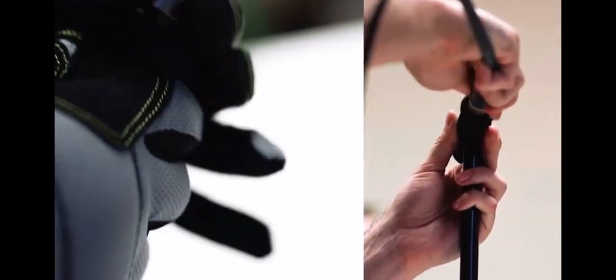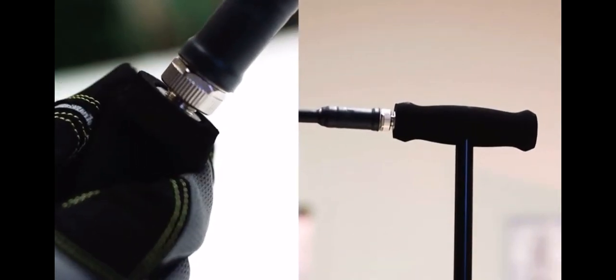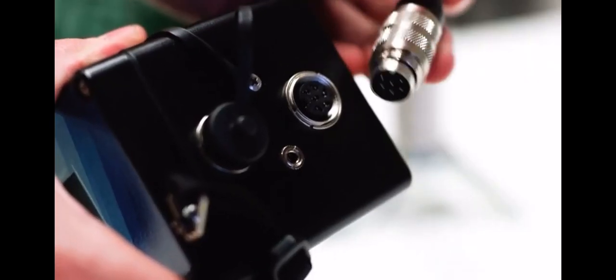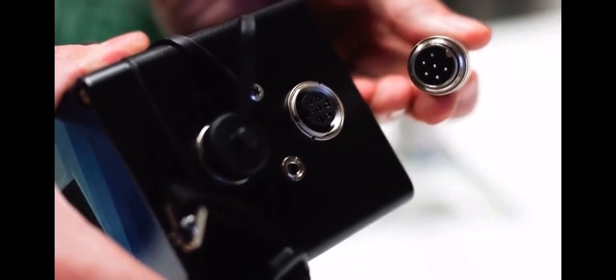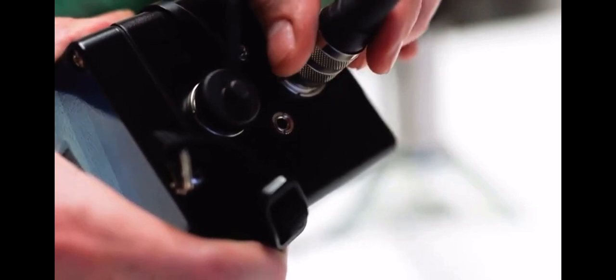Pliers or a wrench are not necessary for a tight connection. Next, insert the six-pin end of the cable into the corresponding outlet on the 550 amplifier. Just like the four-pin connection, make sure to align the notches and not over-tighten.